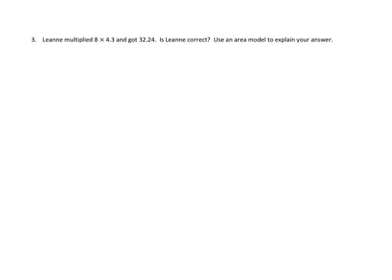Last question. Leanne multiplied. Oh, a redraw and write strategy. Redraw right. Leanne multiplied 8 times 4.3, or four and three tenths, and got 32.24. Is Leanne correct? Use an area model to explain your answer. Well, that seems pretty reasonable. Let's draw our area model and see if that worked out. 8 times 4 and 3 tenths. This is going to be a simpler area model. We've got 4 ones and 3 tenths. And we're multiplying everything by 8.